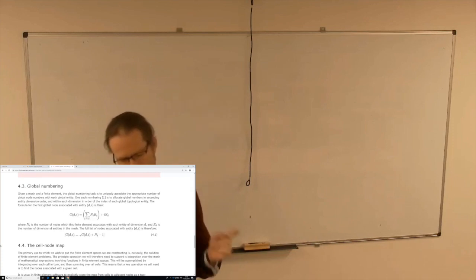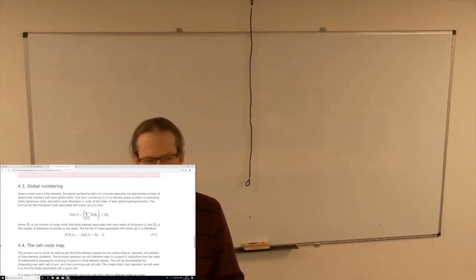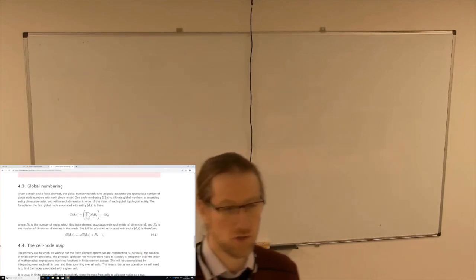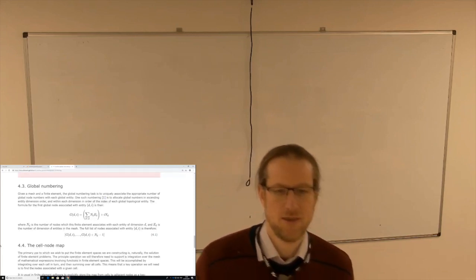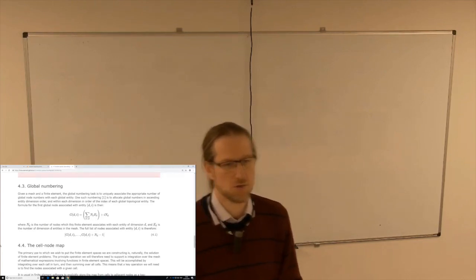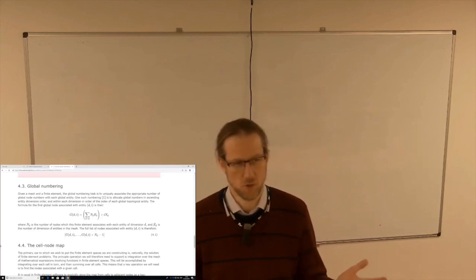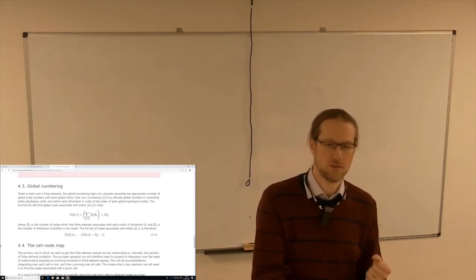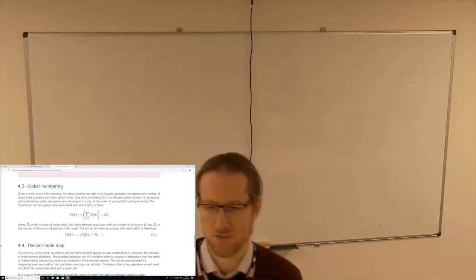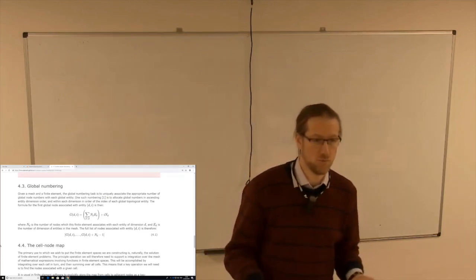If you recall, what we talked about last time is local numbering. Local numbering associates the nodes on an individual finite element with the topology of the reference cell. Now what we're going to do is global numbering. Global numbering is the mechanism by which we first associate the full set of global nodes and therefore global basis functions in our whole finite element space over the whole mesh with the mesh entities. Then we work out a way such that as we visit each cell, we get the right global entities in the right order. That's what we need to be able to actually do integration, which is after all the thing we're after.